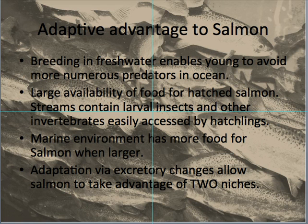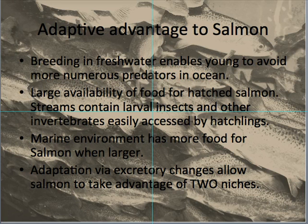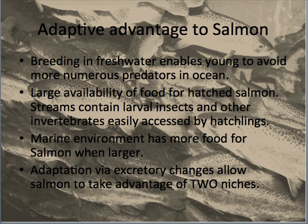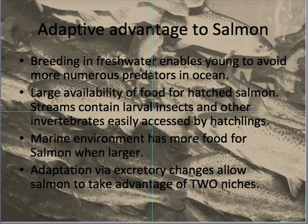The advantage to the salmon in doing this — in going from a marine environment into freshwater — well, breeding in freshwater enables the newly hatched young to avoid lots of predators out in the ocean, because they'd be in the plankton and get eaten by planktivores really quickly. There's a huge amount of food for hatched salmon, like larval insects and other invertebrates. The marine environment also has a lot more food for salmon when they're bigger. So adaptation via changing their excretory mechanisms allows the salmon to take advantage of two niches, which is a huge advantage to them.